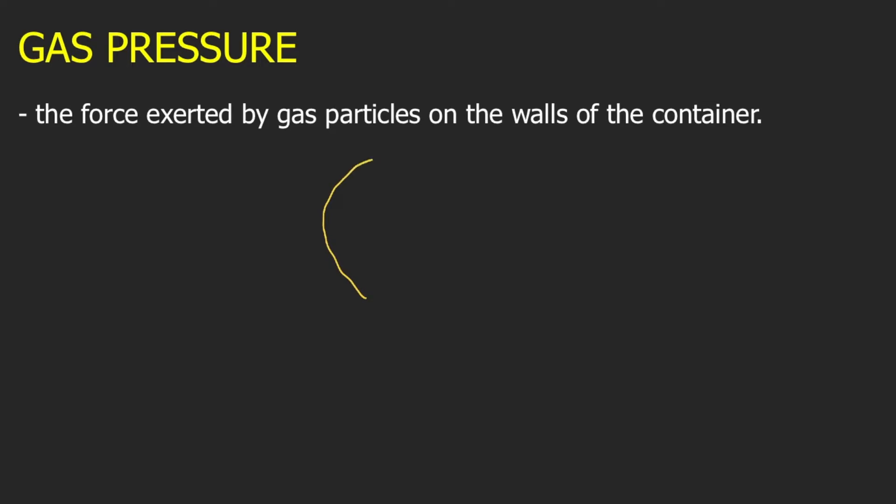So let's say you have here a balloon. Forgive my drawing. You fill the balloon with air, and you know that air is composed of different gaseous particles. You have oxygen gas, nitrogen gas, carbon dioxide, etc. Let's say these green circles are your gaseous particles. Now, you know that these particles are mobile. They move around. At some point, these particles will collide onto the walls of the balloon.